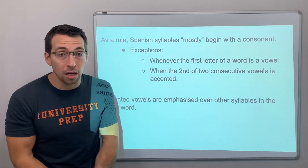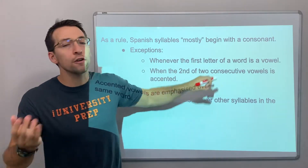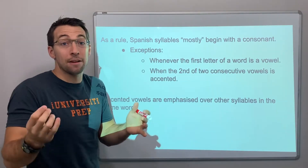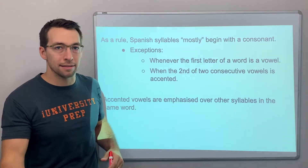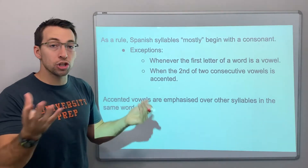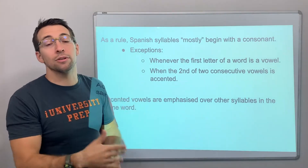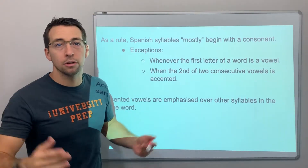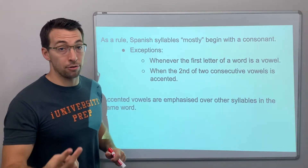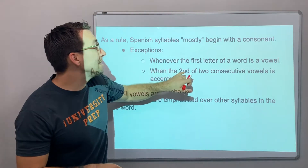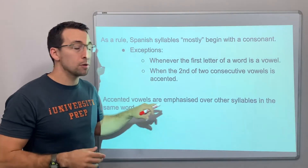The syllable begins with a consonant, mostly. What are the exceptions? Whenever the first letter of a word is a vowel, that's an exception. For example, estudiante — a student — starts with an E, starts with a vowel, so that first syllable starts with a vowel. Secondly, when you have two vowels together, adjacent, and the second vowel is accented — we have a few examples coming up.